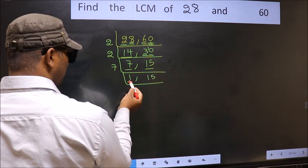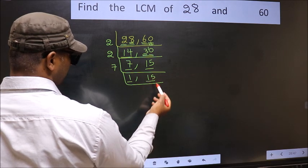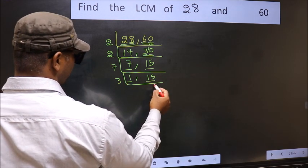Now we got 1 here. So focus on the other number 15. 15 is 3×5, 15.